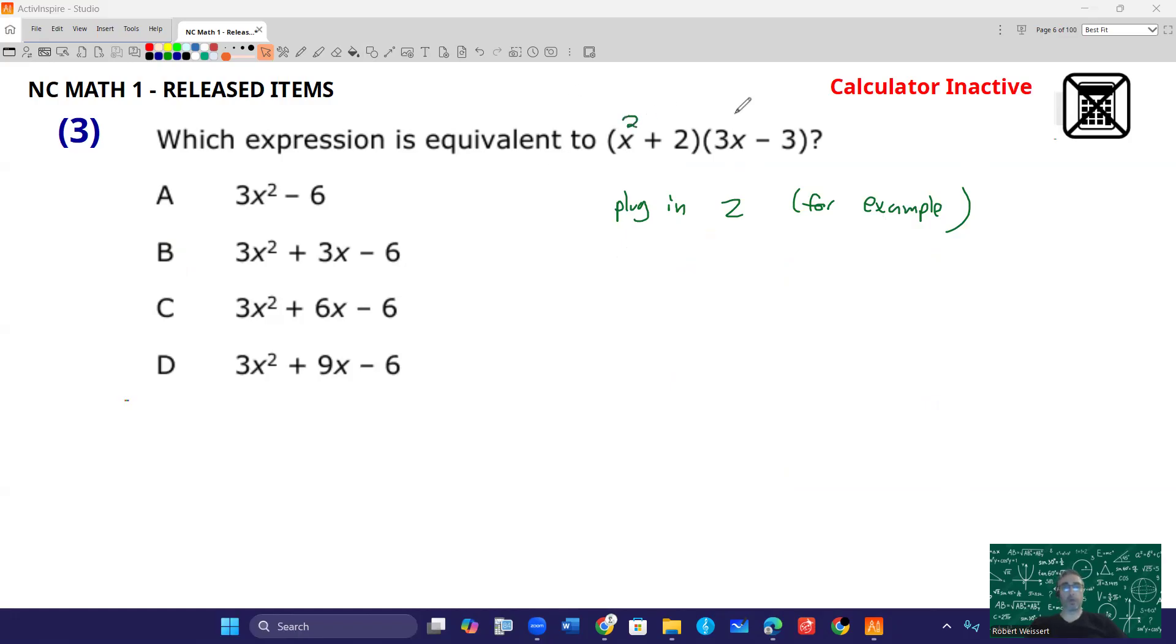So this is going to be 2 plus 2, and 3 times 2 minus 3. So that's going to be 2 plus 2, times 3 times 2 minus 3. That's going to be 4 times 3 times 2 is 6. Order of operations, we should do what's in parentheses first. So that's 4 times 6 minus 3, which is 3. That's going to give you 4 times 3, which is 12.